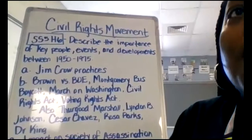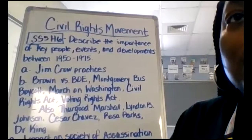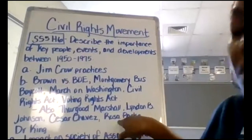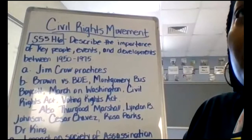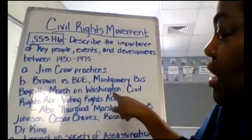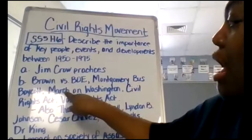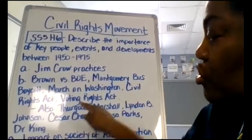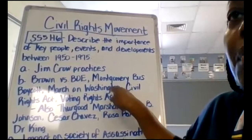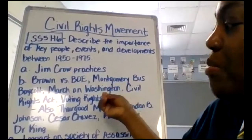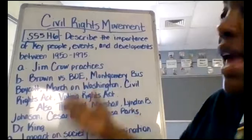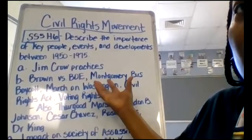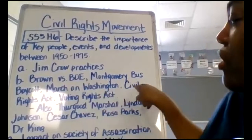The Montgomery Bus Boycott — people stopped riding the bus for 381 days, over a full year, because Rosa Parks refused to give up her seat on the bus and was arrested. The March on Washington is where Dr. King did his famous I Have a Dream speech. That speech was very monumental in the Civil Rights Movement, with over 250,000 people there on the steps of the Lincoln Memorial in Washington, D.C.